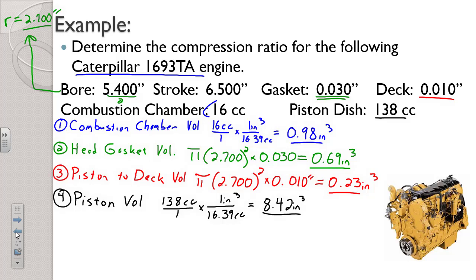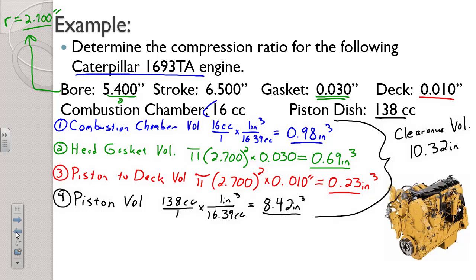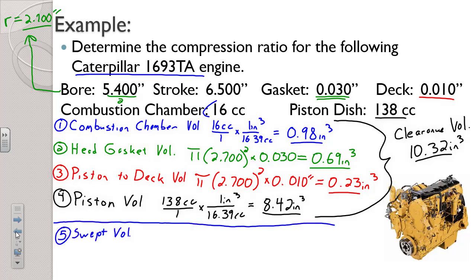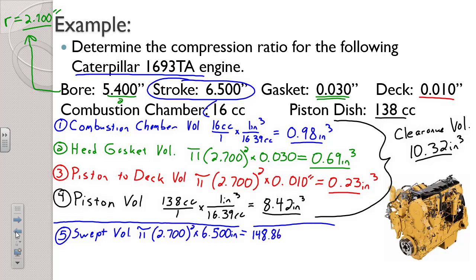There are your four small volumes — those we can add together. That is your clearance volume. Adding them up, we get 10.32 cubic inches. That leaves just one more volume: our swept volume. Swept volume is pi times 2.700 inches squared, multiplied by our stroke of 6.5 inches, giving us 148.86 cubic inches.